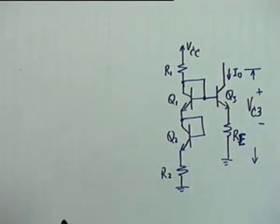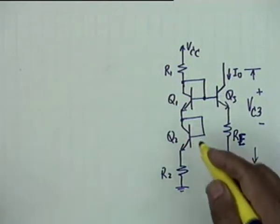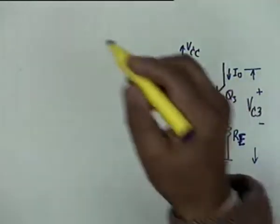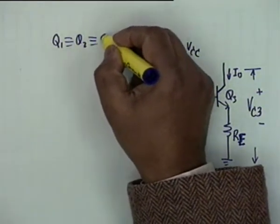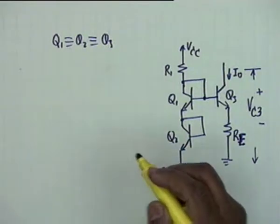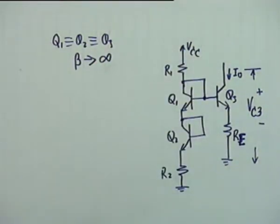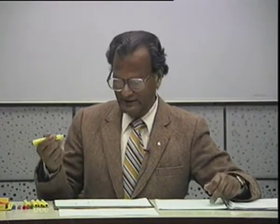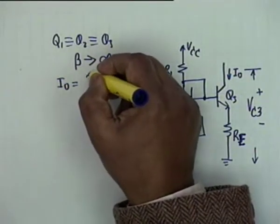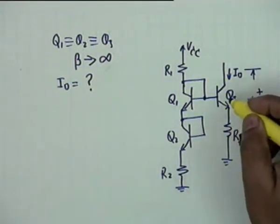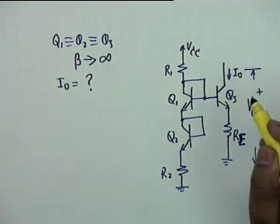This is not the ordinary current mirror circuit, nor the Widlar circuit — there is an extra transistor. The question says: assume all transistors Q1, Q2, Q3 are identical, made on the same chip. Beta is so large it can be assumed to go to infinity, meaning base current is negligible compared to collector current, and collector current and emitter current are approximately the same. Find an expression for I0.